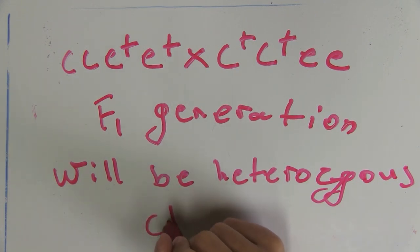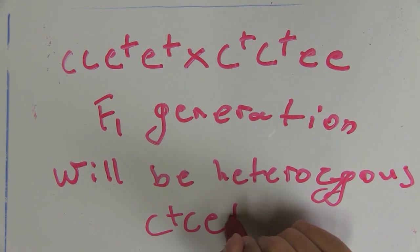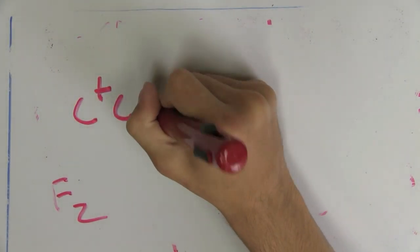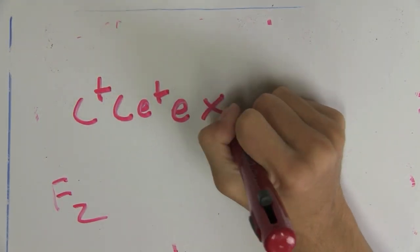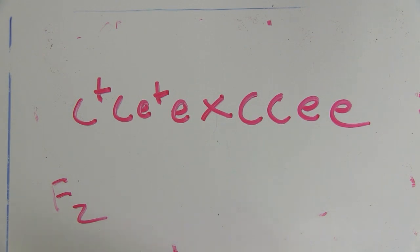And now for part two of this, the F1 offspring is crossed to flies with curved wings and ebony bodies. This is a test cross, meaning homozygous recessive for both traits. We're doing that cross right now.